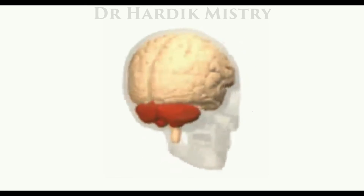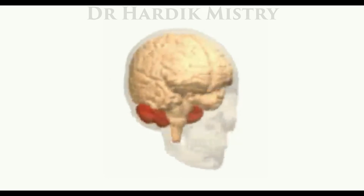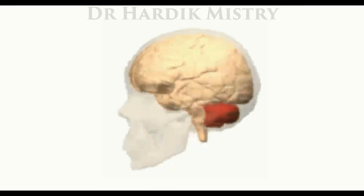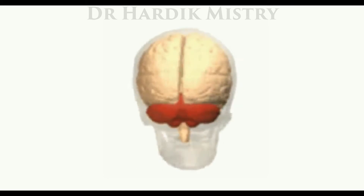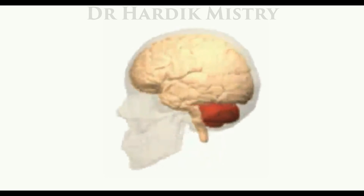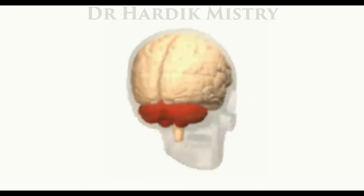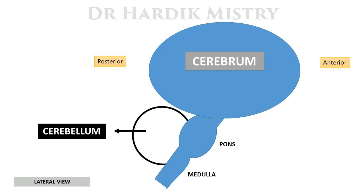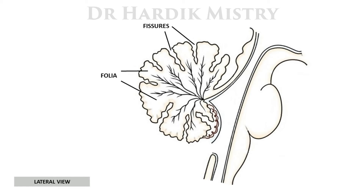In this animation, the red color part is the cerebellum and the white color part is the cerebrum. The cerebellum occupies the posterior inferior portion of the cranial cavity, just below the occipital lobe of the cerebrum and behind parts of the brain stem.